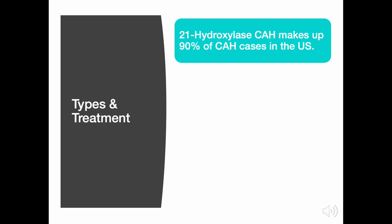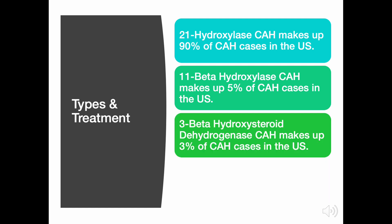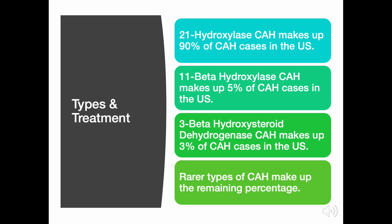The type of CAH is named after the enzyme that's missing. 21-hydroxylase CAH makes up 90% of cases in the US. 11-beta-hydroxylase makes up 5% of cases in the US. 3-beta-hydroxysteroid dehydrogenase CAH makes up 3% of cases in the US. Rarer types of CAH make up the remaining percentage.